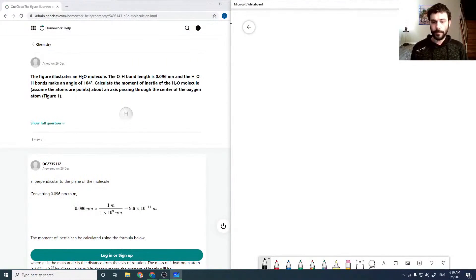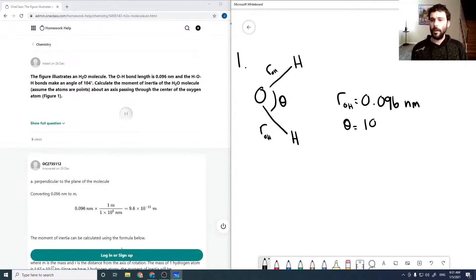So here's our first one. We have an H2O molecule that looks something like this, in which each of our bond lengths, which I'm going to write as ROH, so ROH is equal to 0.096 nanometers. And then the HOH bond angle, which I'm going to call theta, is equal to 104 degrees.